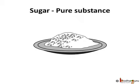What does 1 kg sugar contain? Actually, just one component — that is sugar particles only. If you observe carefully, all the particles of sugar are similar. We cannot differentiate one particle of sugar from another. But a particle of sugar is different from a particle of salt, in appearance as well as in taste. So we can say sugar is a pure substance consisting of a single component and it has its own specialities and a definite composition.